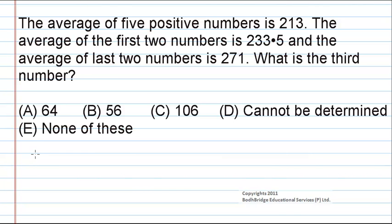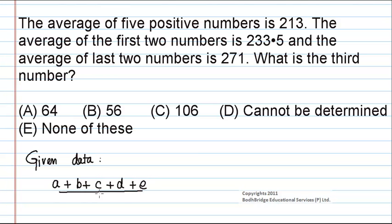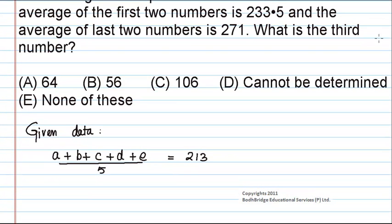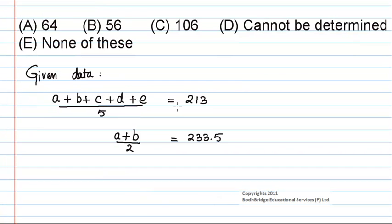Now let us write the given data. The average of the 5 positive numbers is 213. Let us consider that the 5 positive numbers are A, B, C, D, and E. So the average will be A plus B plus C plus D plus E divided by 5, equal to 213. The average of the first two numbers is 233.5, so A plus B divided by 2 is equal to 233.5. The average of the last two numbers is 271, so the last two numbers are D and E, and D plus E divided by 2 is equal to 271.